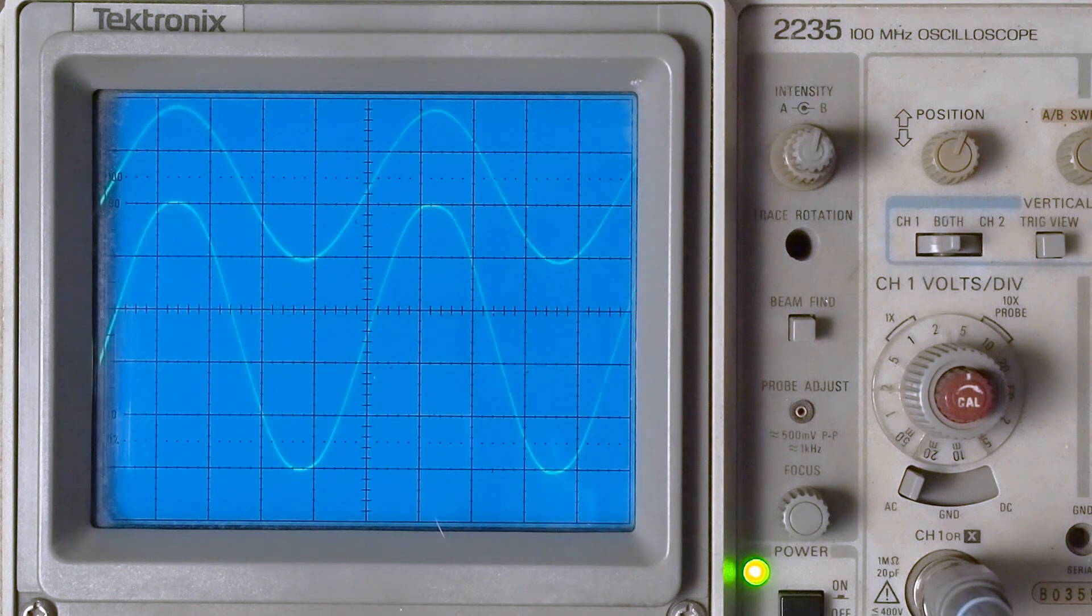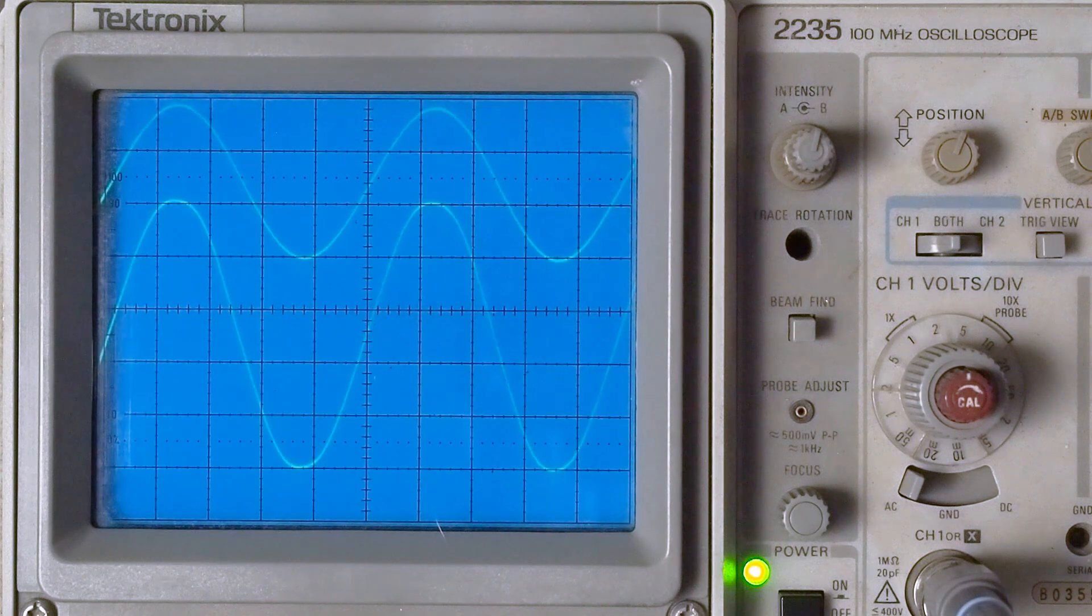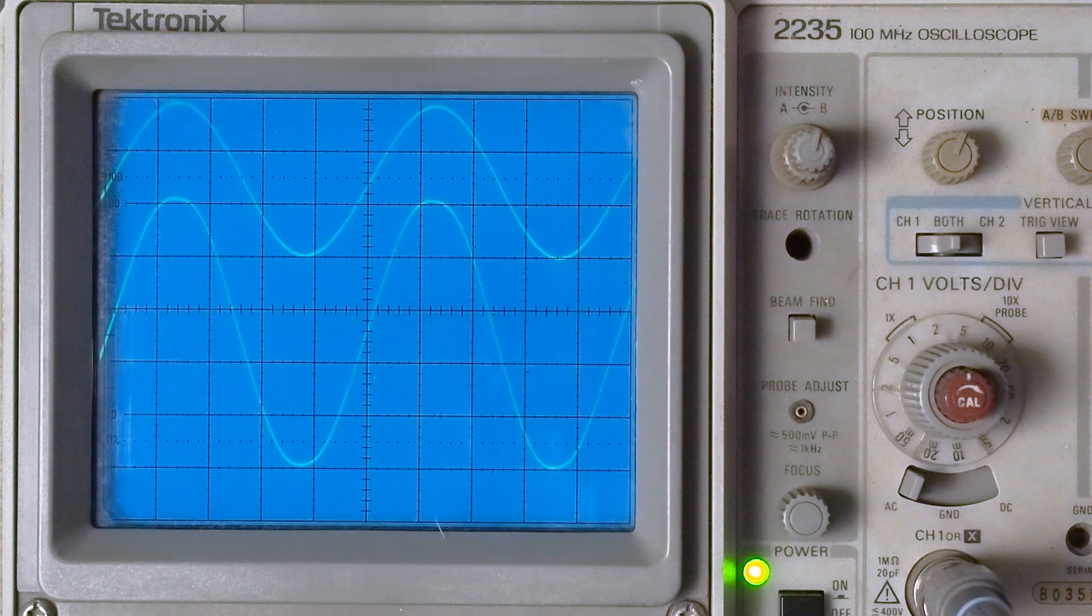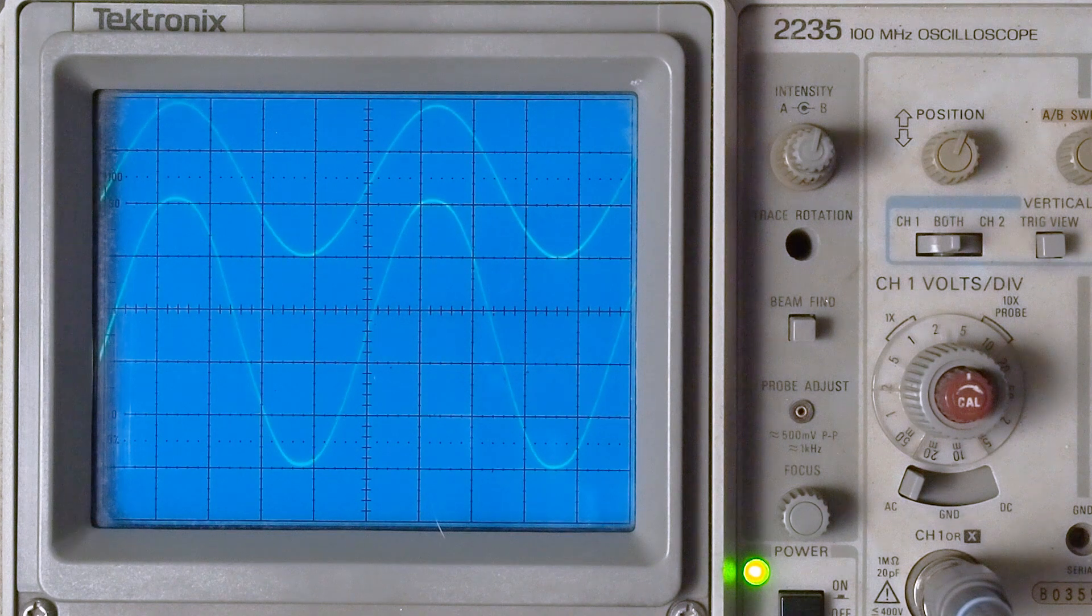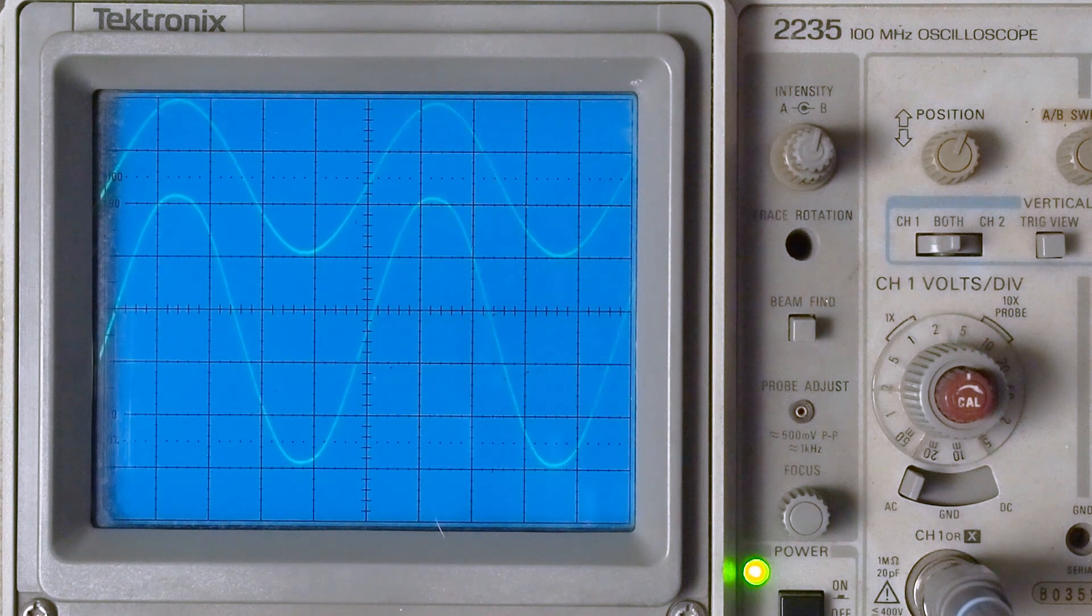That should come out to right around 10 watts, maybe just a little more of output before this amp starts clipping. For these fairly small tubes I think that's doing pretty good, especially running them as cool as we are. I think we could probably squeeze a little more power out by running the tubes up closer to their limits. But I believe we're under 12 watts of dissipation on a 14 watt tube, so that's really safe.